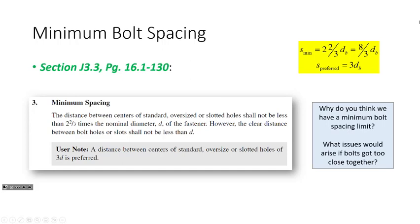There is a preferred bolt spacing of three times the bolt diameter. If we're in design land, I'll tell you whether to use minimum or preferred bolt spacing. For checking whether a connection adheres to the specification, you're checking minimum and maximum, not the preferred. Why do we have a minimum bolt spacing limit? What issues would arise if the bolts are too close together? If bolts get too close together, you can't get a wrench around them to tighten them. The bolts have to have some degree of space between them in order to actually facilitate construction.